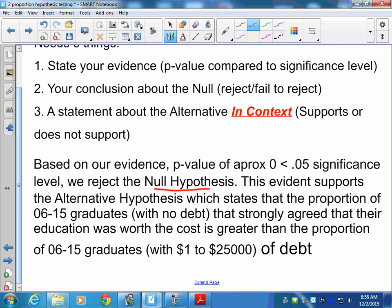This evidence supports the alternative hypothesis which states the proportion of 06 to 15 grads with no debt that strongly agree their education was worth the cost is greater than the proportion of students with some debt in that situation.